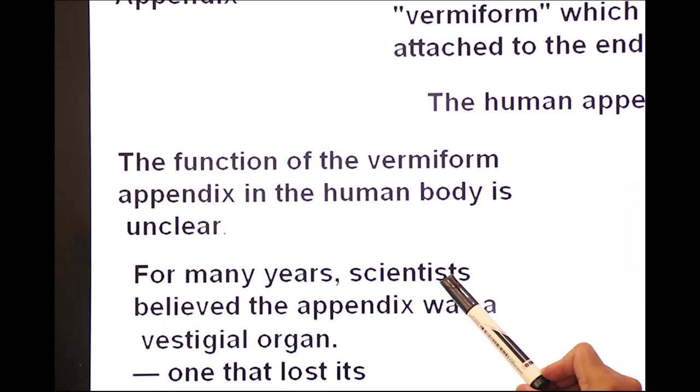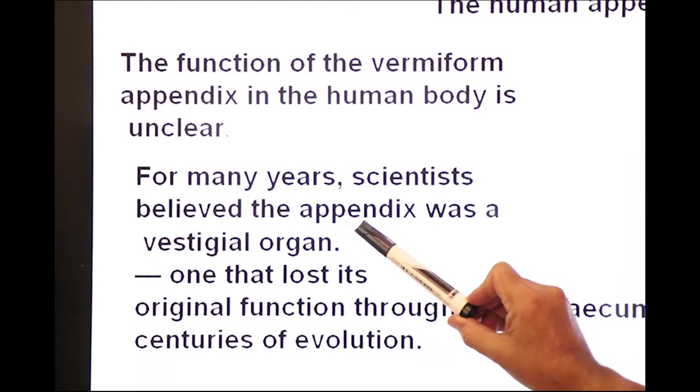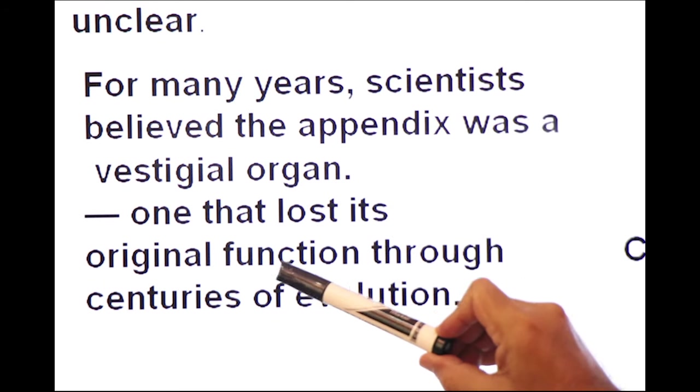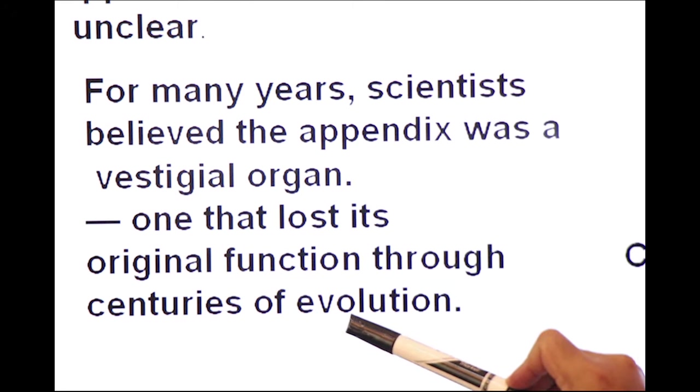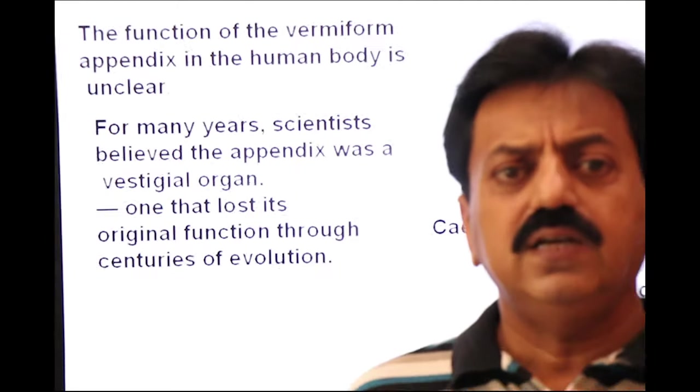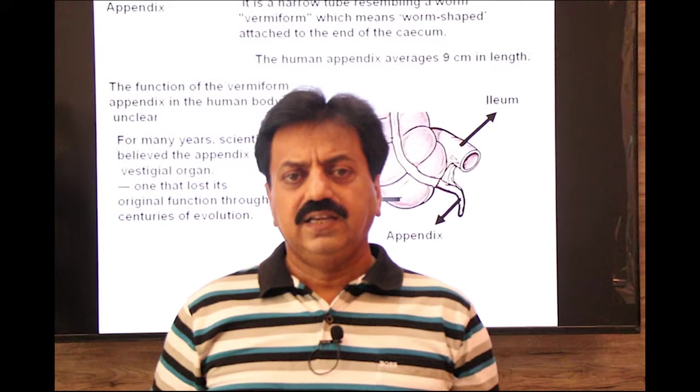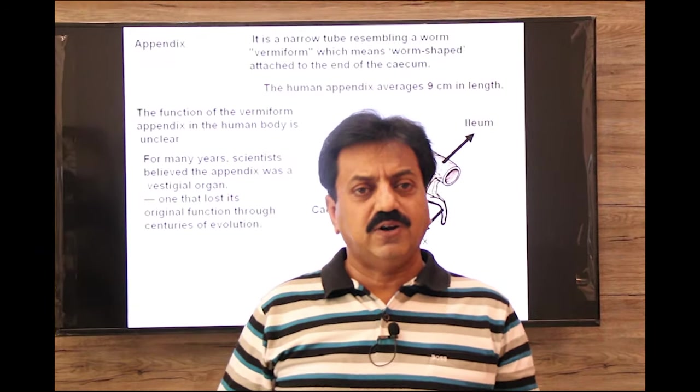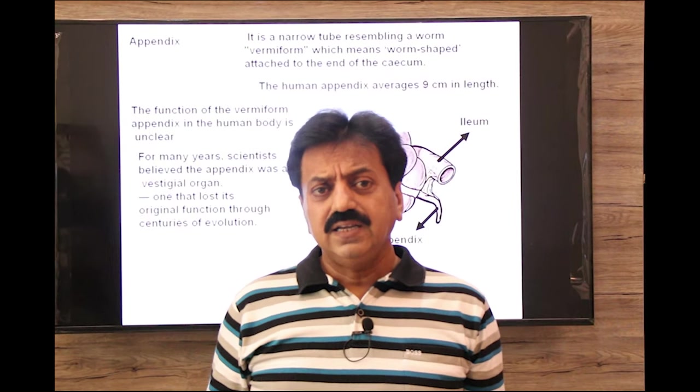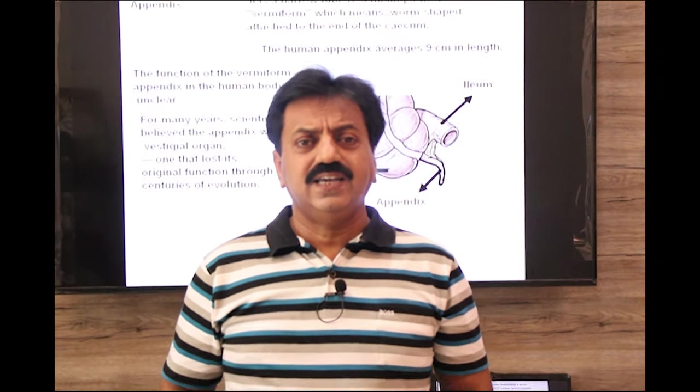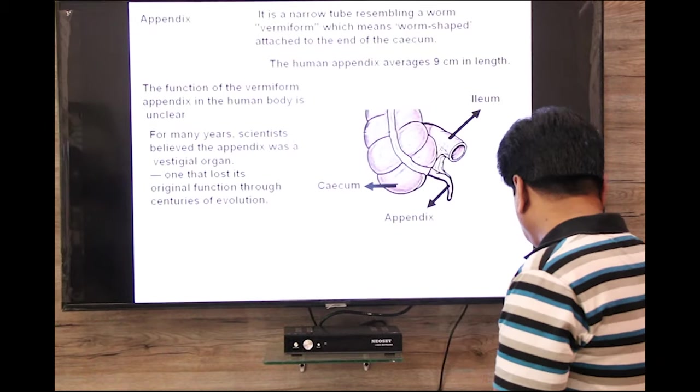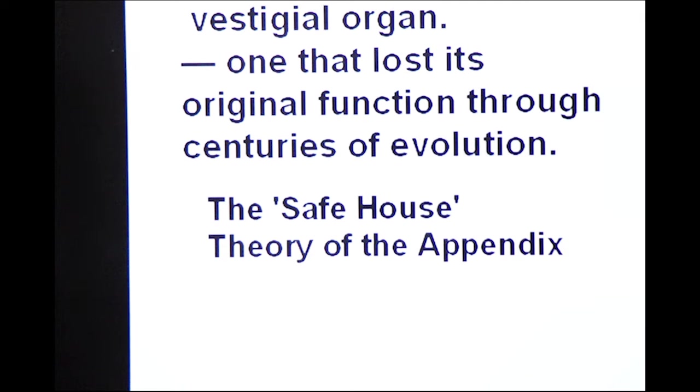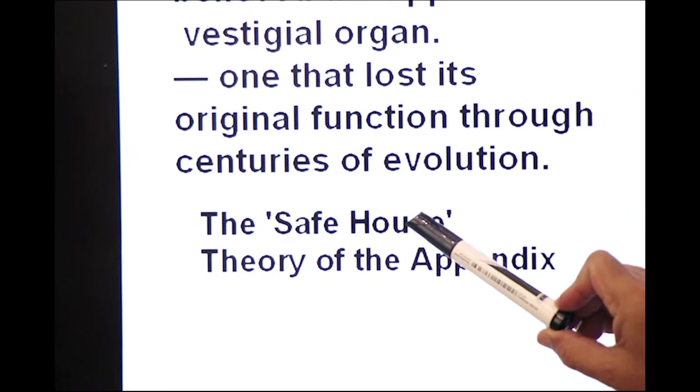For many years scientists believed that the appendix was a vestigial organ, once that lost its original function through centuries of evolution. So dear students, many scientists believe that it is a vestigial organ. Vestigial organs are those which were once functional but now they are non-functional. But a recent theory came to this function. Look at which recent theory is. This is the recent theory about the function of vermiform appendix: the safe house theory of appendix.